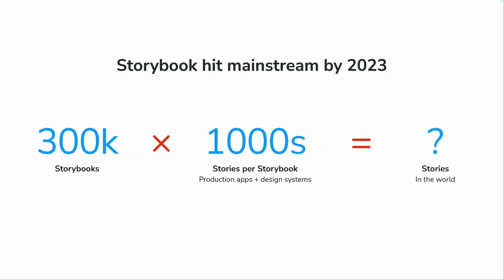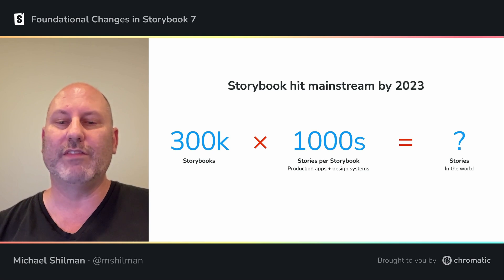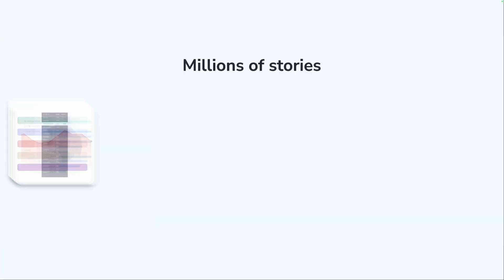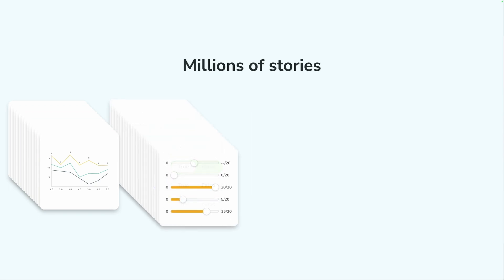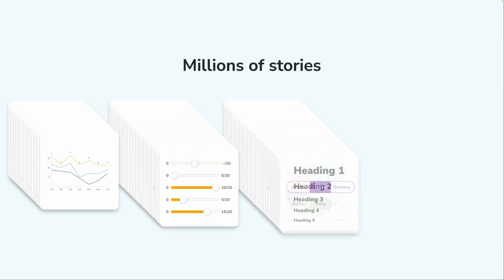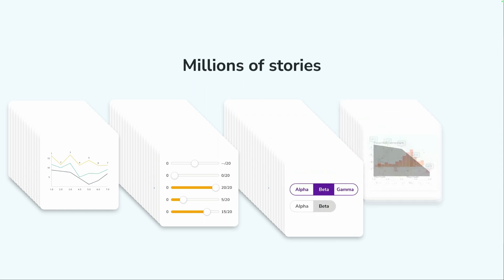Large Storybooks today contain thousands of stories. So you can see where this is going — on one hand, we've got hundreds of thousands of Storybooks, and on the other hand, we've got hundreds or even thousands of stories per Storybook. We haven't counted how many stories are out there, but it's in the millions and it's growing exponentially. That means everything we can do to improve ergonomics goes a really long way.